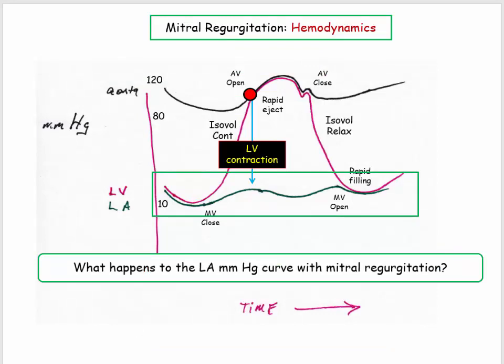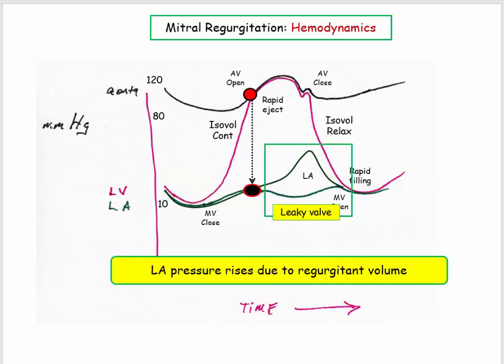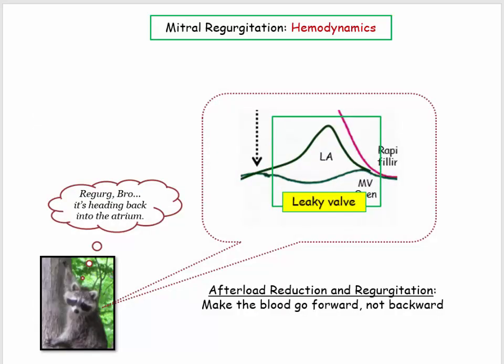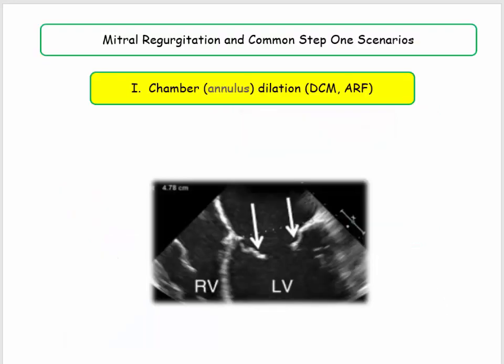Unlike mitral stenosis with complex hemodynamics, mitral regurgitation is pretty straightforward. The hemodynamic aberration will be seen in the LA pressure curve, since we aren't typically affecting the left ventricle or aortic pressures. The LA pressure rises due to the regurgitant volume during systole or LV contraction. Once you identify that the LA pressure curve is the low-pressure one at the bottom of the cardiac cycle curve, the rest of the hemodynamics fall into place intuitively, reinforcing the principle of afterload reduction — we want that blood going forward, not backward.